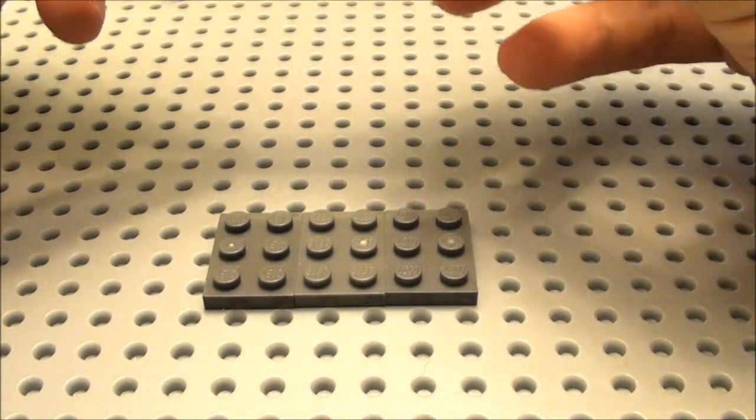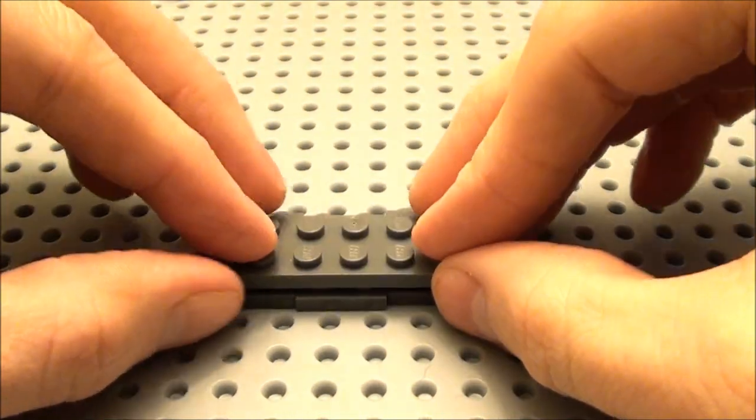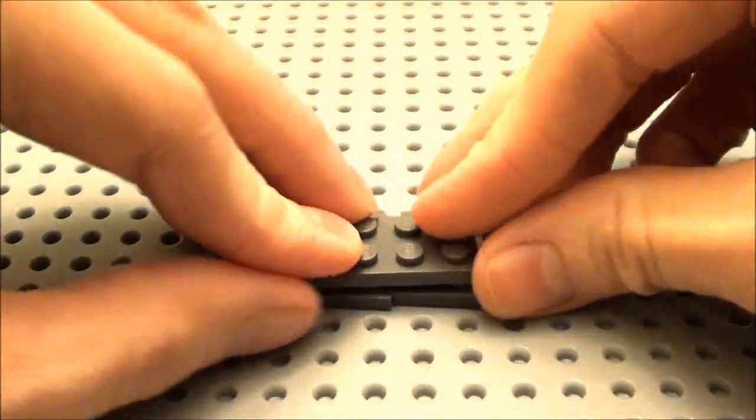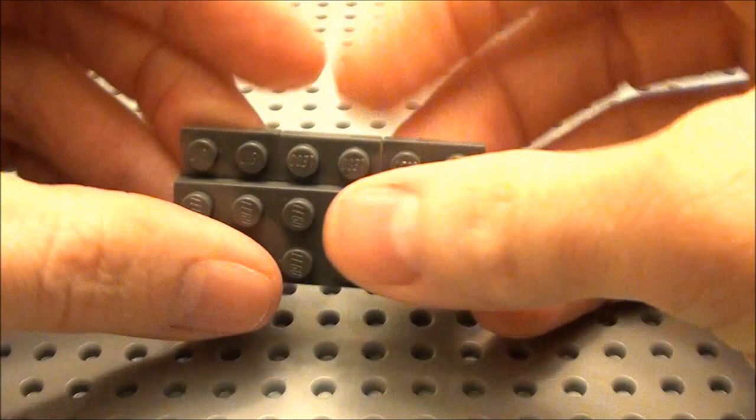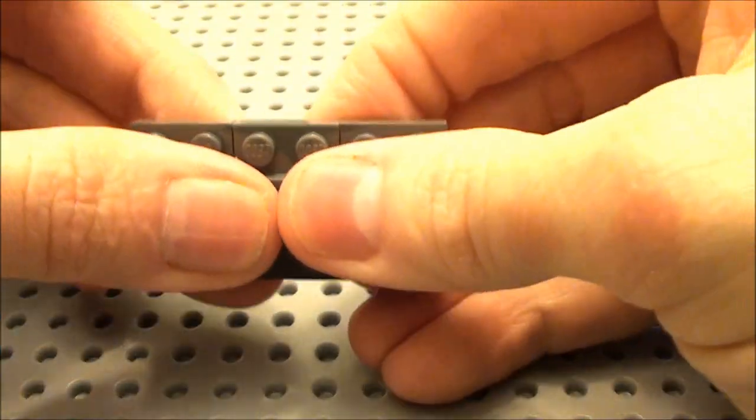Then we're going to start building the bottom of our grill. Take a 2 by 6 plate. We'll place it right here. We got this one stud recessed opening here.